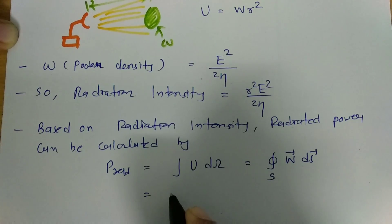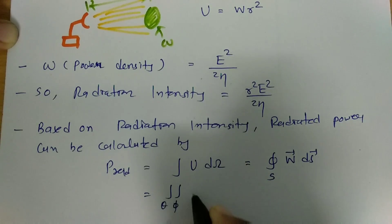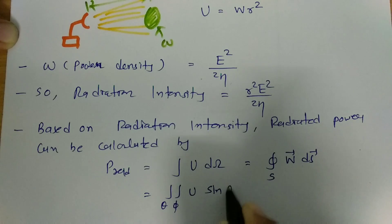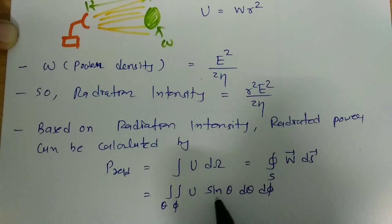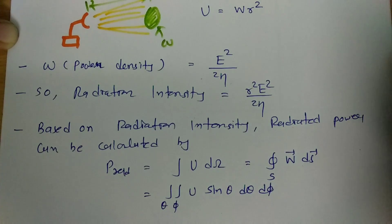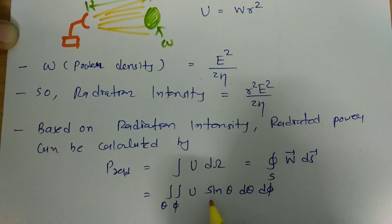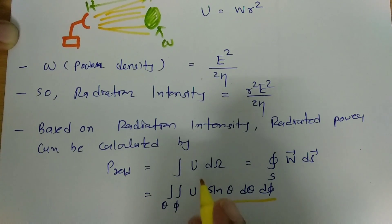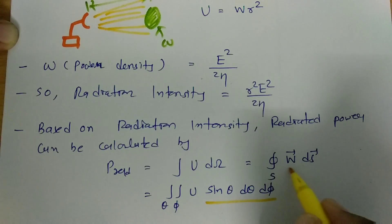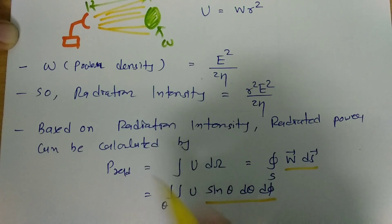So this is the key difference: based on power density, we do surface integration to get radiated power, and based on radiation intensity, we do integration with respect to solid angle — that is, sine theta d theta d phi — to calculate radiated power.